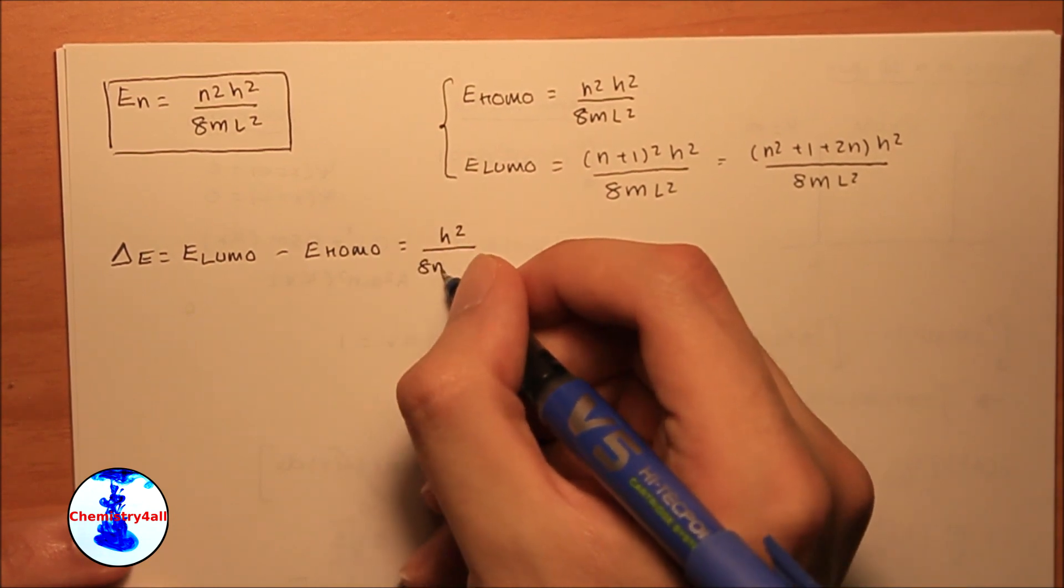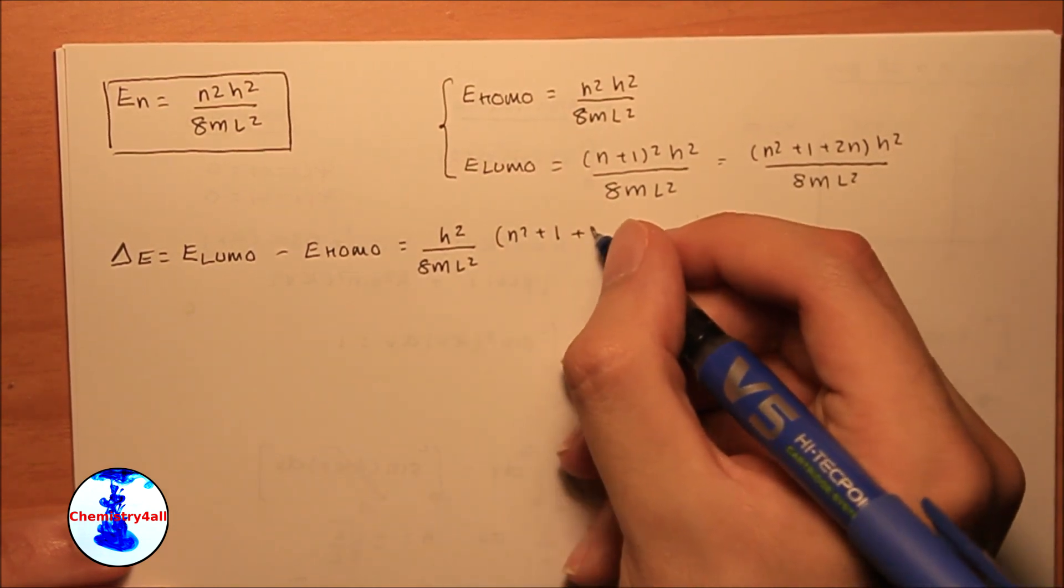Now we can obtain a general formula for the energy difference between these two frontier orbitals.